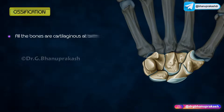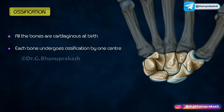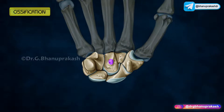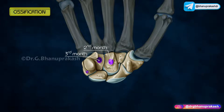Ossification: All of the bones are cartilaginous at birth. Each bone undergoes ossification by one center. The center for capitate appears in the second month, the center for hamate appears in the third month, the center for triquetral in the third year, and the center for lunate in the fourth year.